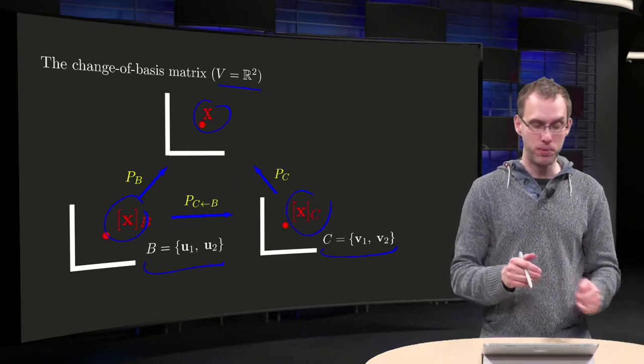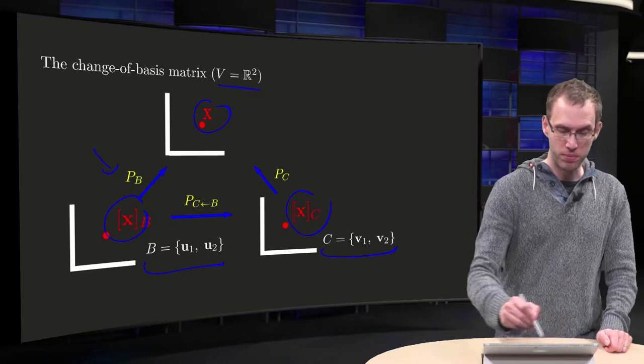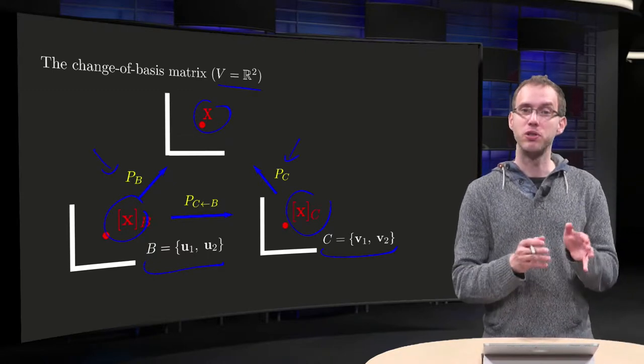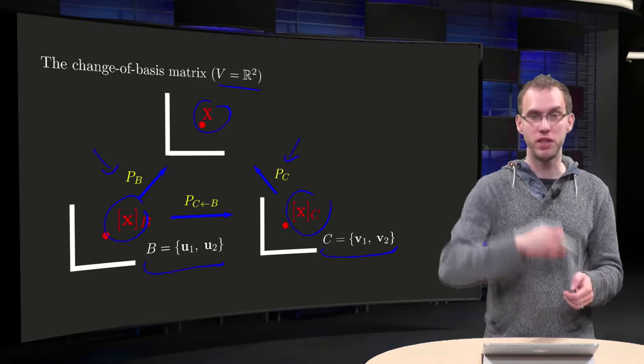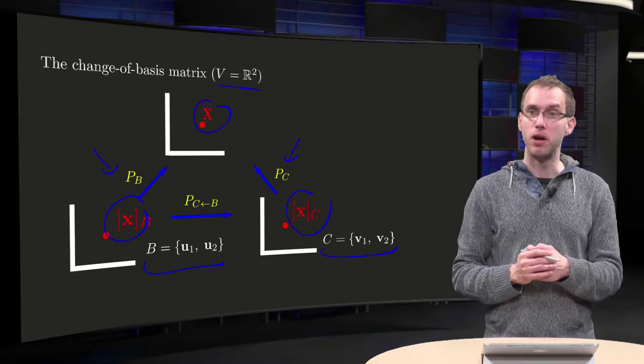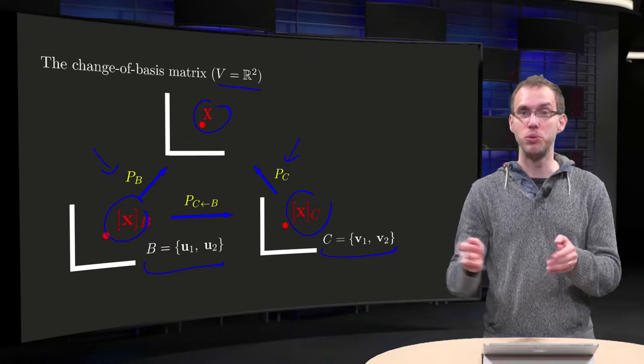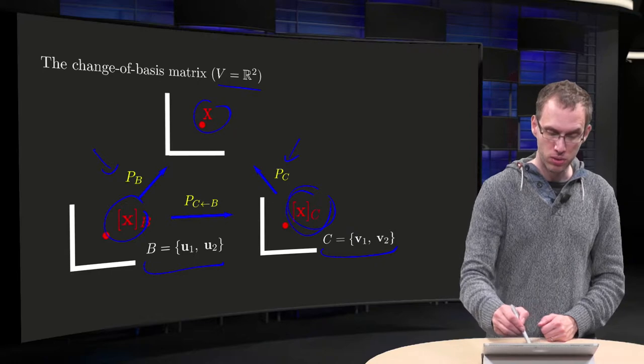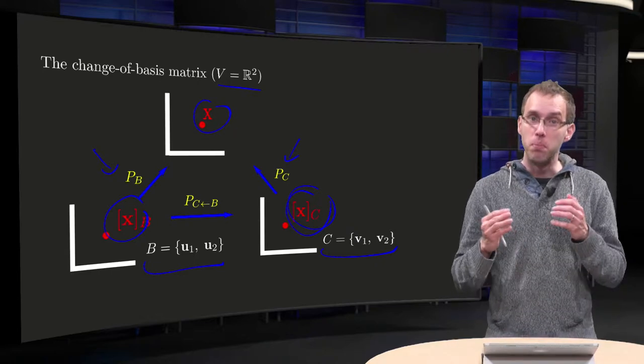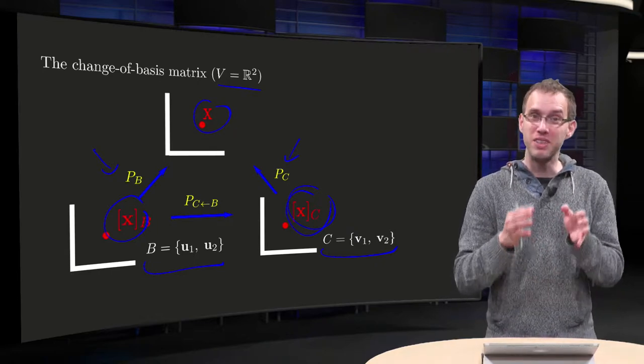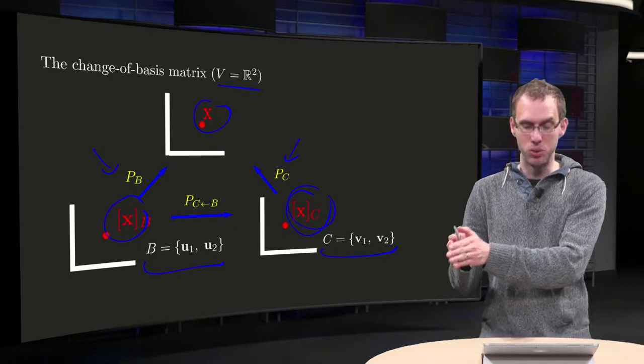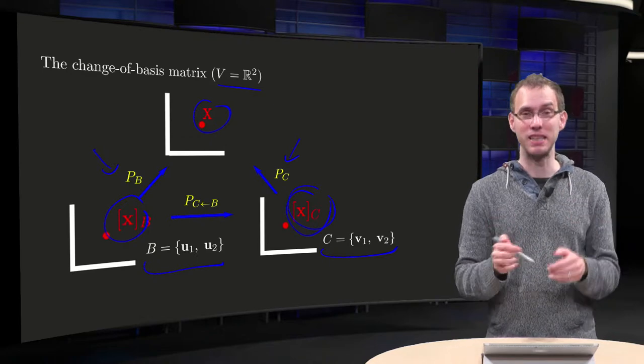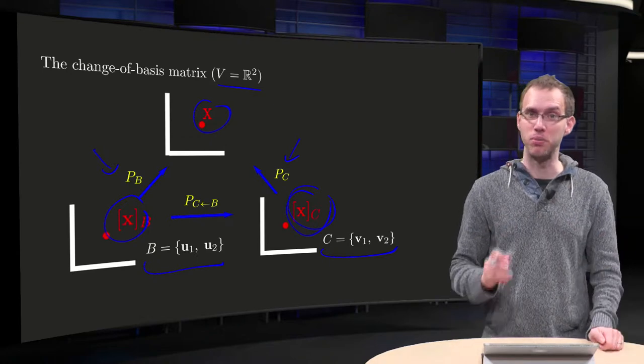We know how to find the matrices Pb and Pc. You just plug the vectors u1 and u2 into a matrix and you have Pb which maps xb to x. And you just plug the vectors v1 and v2 in the matrix and you have Pc which maps your xc to x. But now, how can we go directly from xb to xc? Can we find P from b to c? How can we find that matrix? It will also be some 2x2 matrix.